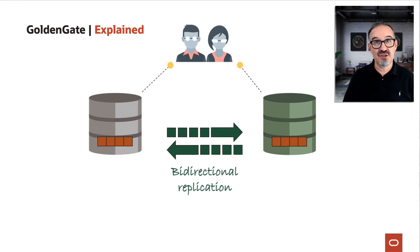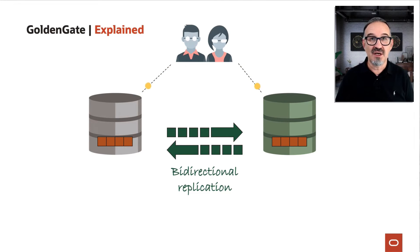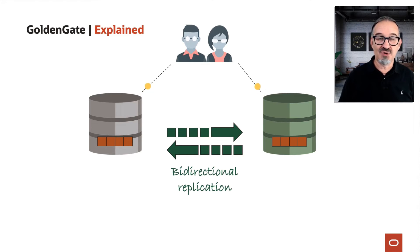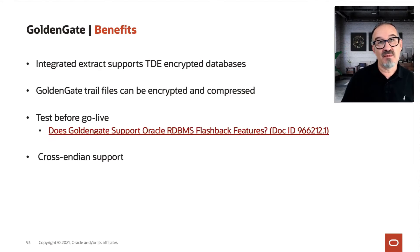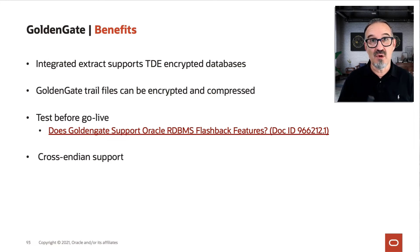You could also have bidirectional replication, but keep in mind that requires extra setup work — it's not just clicking out of the box. There's more work, especially for conflict detection and conflict resolution, because changes on one side going to the other shouldn't come back again. A few benefits: integrated extract, support for TDE encrypted databases, encryption and compression of GoldenGate trail files, the ability to test the entire setup with flashback, and cross-platform support.